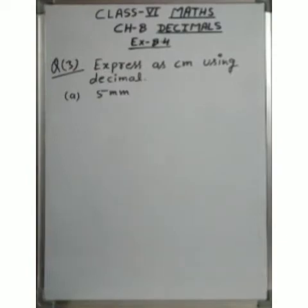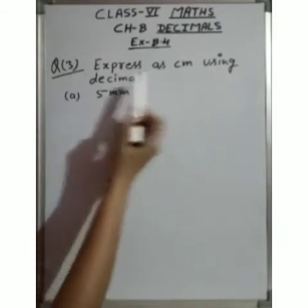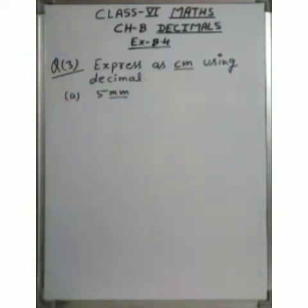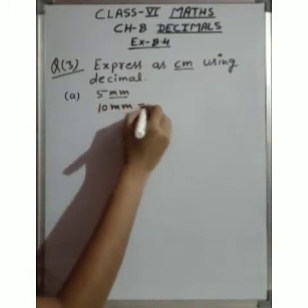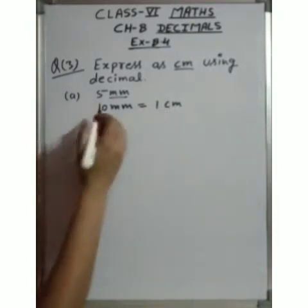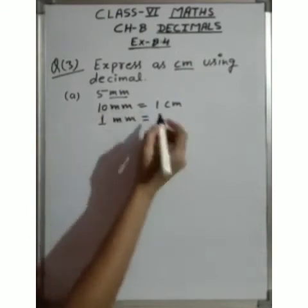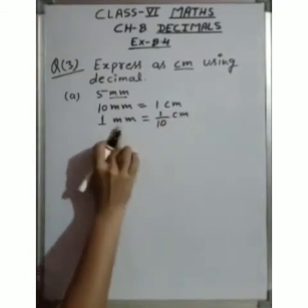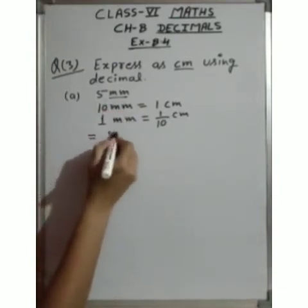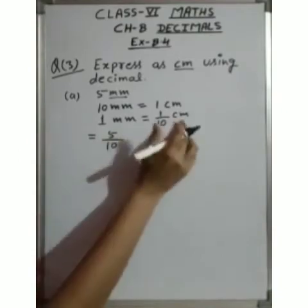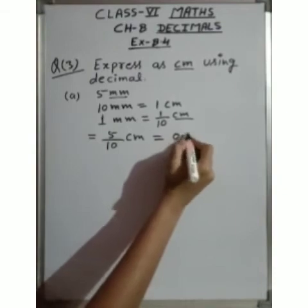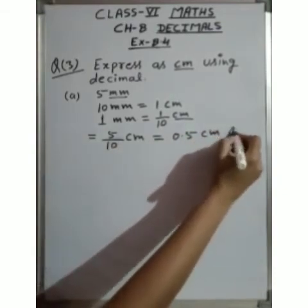Question 3: express as centimeters using decimals. We are given millimeters and need to express in centimeters. We know that 1 centimeter equals 10 millimeters, so 1 millimeter equals 1 upon 10 centimeters. To convert millimeters to centimeters, we divide by 10. For 5 millimeters: 5 upon 10 = 0.5 centimeters. Our answer is 0.5 centimeters.